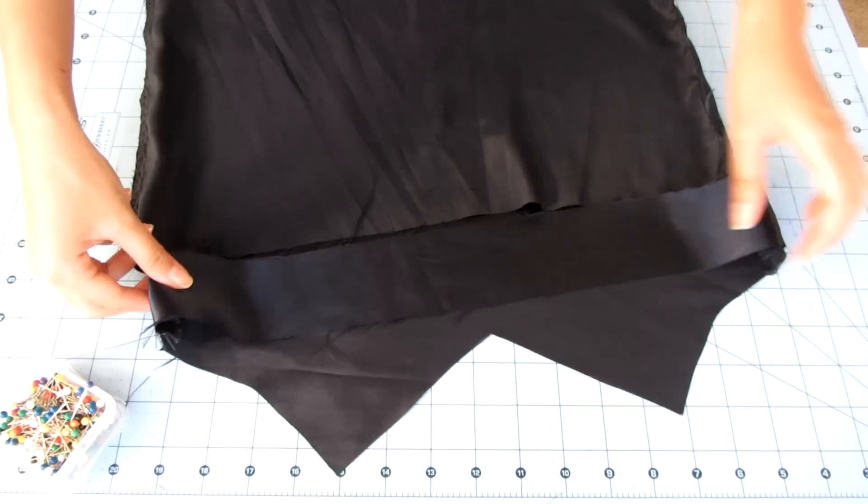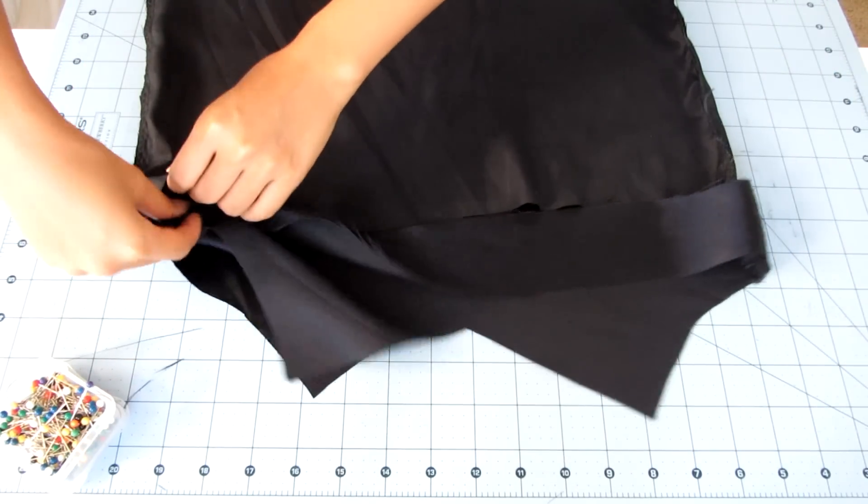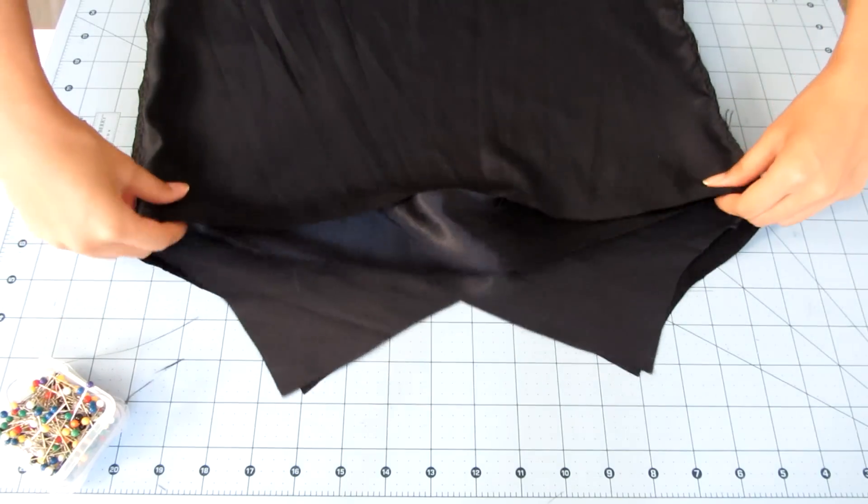I sewed the two facing pieces right sides together using a straight stitch. Then, with the cami inside out, slip the facing piece into it so that the right sides are together just like this.